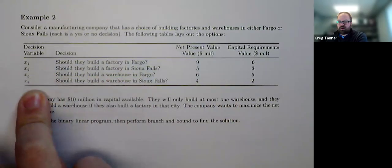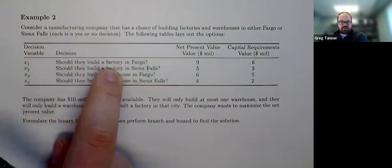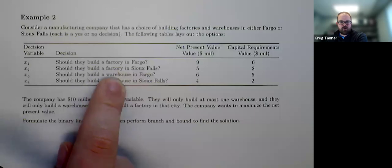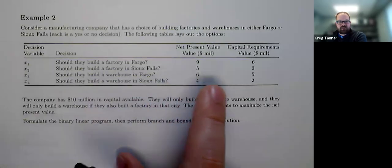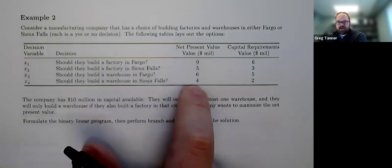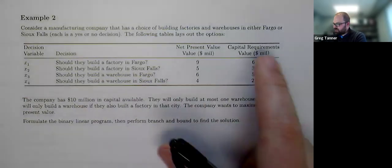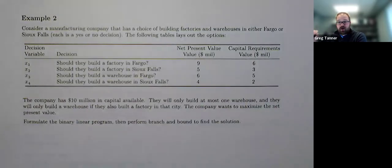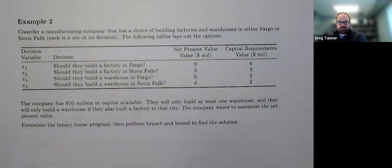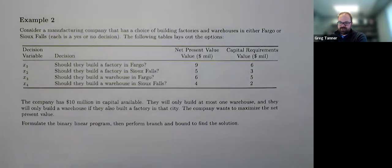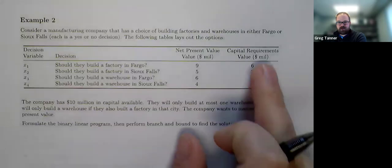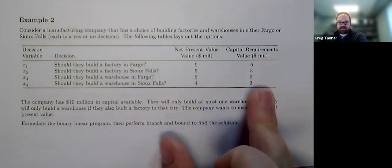We're going to essentially create a decision variable, which is going to be a binary variable for each of those decisions: factories in Fargo or Sioux Falls for x1 and x2, and warehouses in Fargo and Sioux Falls for x3 and x4. Each of these decisions has a net present value, which is the value of the investment brought back into current day dollars. And then each of them have capital requirements. How much money do we have to put up now? Probably brought into today's dollars if it's going to be amortized over several years, the capital requirements for those projects as well.